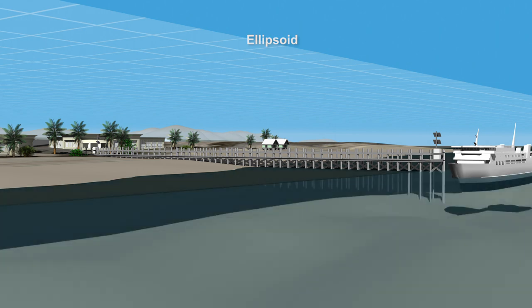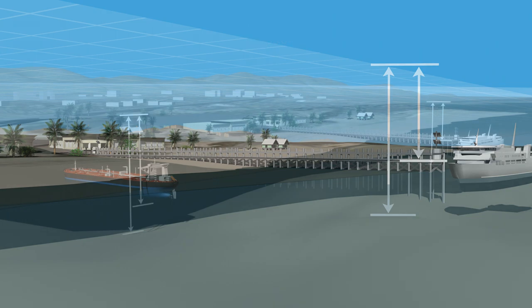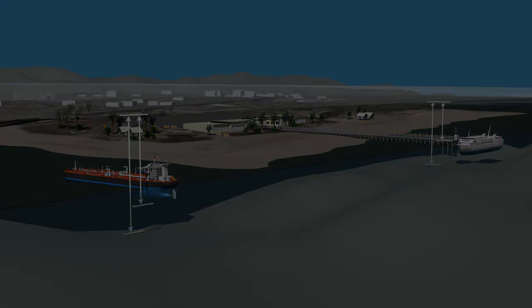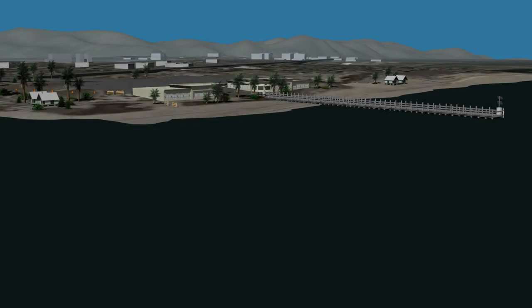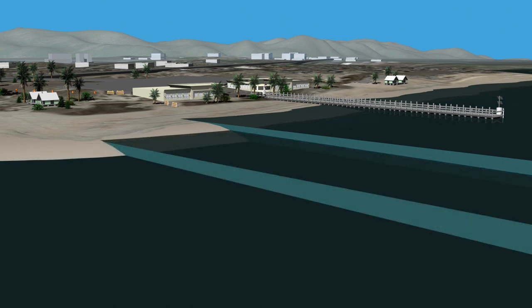LIDAR and sonar data tells us that our pier is 35 meters below the ellipsoid, and the seafloor is 50 meters below the ellipsoid. With this information, we might think we know enough to keep our ships from running aground. But, because water levels are always changing with tides and other meteorological and hydrodynamic effects, we need to use a different reference frame that accounts for changes in water level.